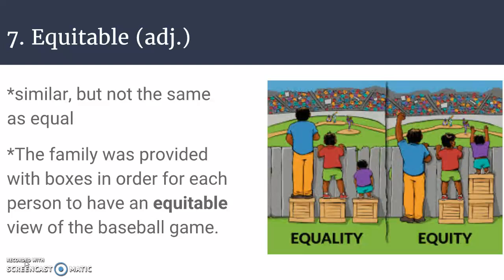Number seven is equitable, which is an adjective. Equitable means fair, just, or embodying principles of justice. This is similar to, but not the same as, equal — just because something is exactly equal does not mean it is equitable for everybody. In the picture, three individuals got an equal-size box to stand on to view a baseball game, but it's not a good solution for everyone. What is more equitable is offering different size boxes for those who are shorter, so they can all actually see the game.